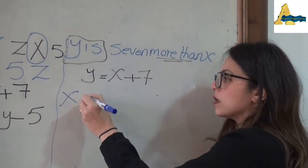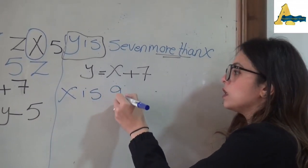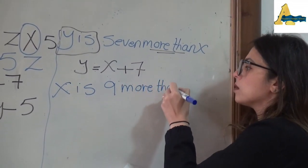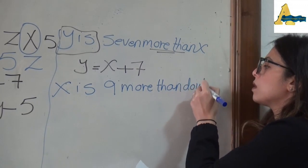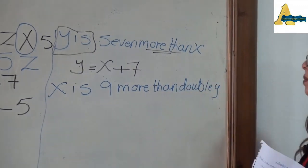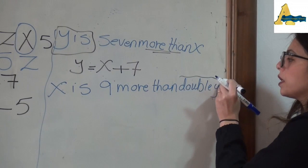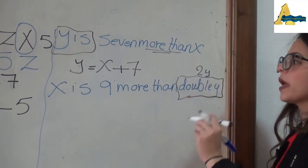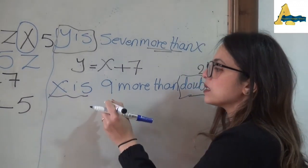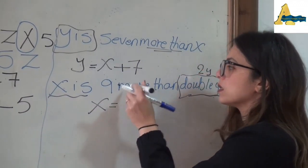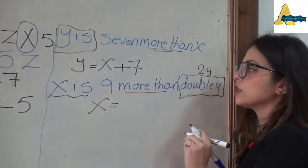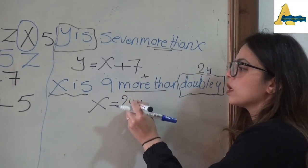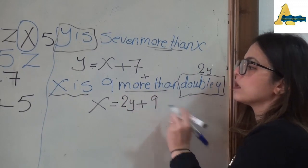Another example: 'x is 9 more than double y'. Double y means 2y. 'x is' means x equals. 'More than' means the sign plus. So x = 2y + 9.